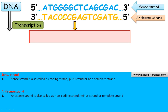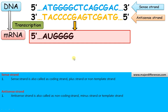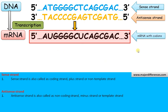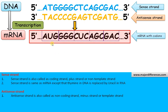Upon transcription there will be formation of an mRNA molecule. This mRNA is with codons — this is a codon. The sense strand mRNA has many codons: AUG that codes for methionine, GGG that codes for glycine, and so on.